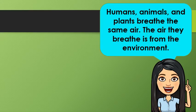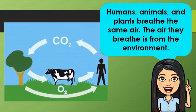Humans, animals, and plants breathe the same air. The air they breathe is from the environment. We all know that we need oxygen to survive. On the other hand, plants need carbon dioxide in making their food.